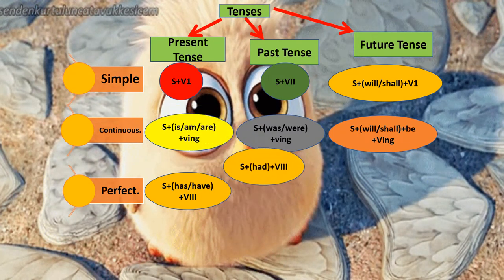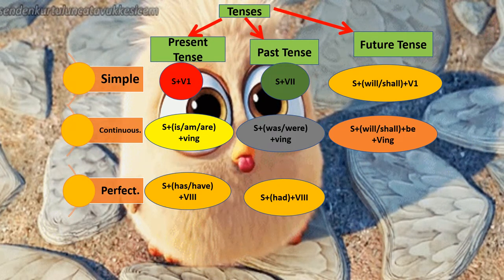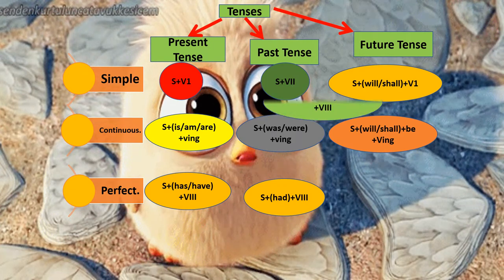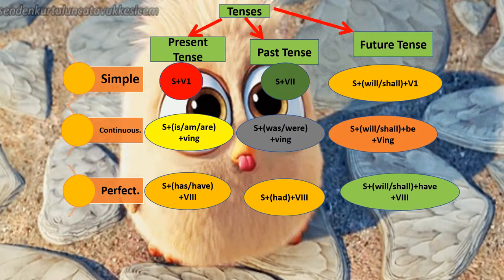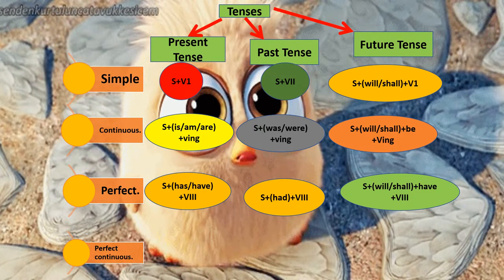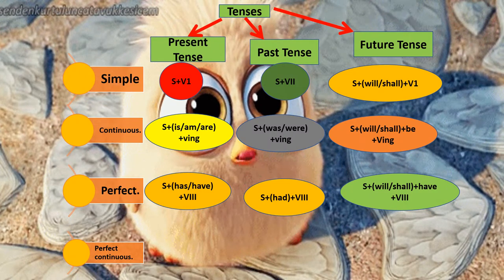Let us make past perfect tense. Past perfect tense uses had with V3. Formula: subject + had + V3. For example: 'she had cooked' or 'they had cooked'. For future perfect tense: will/shall is for future, and have is used (not had, because had means past). Formula: subject + will/shall + have + V3. For example: 'she will have cooked'.